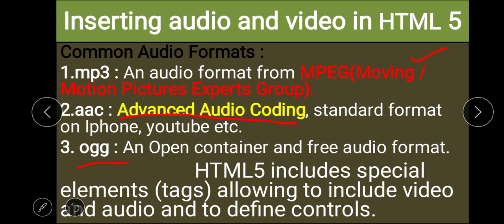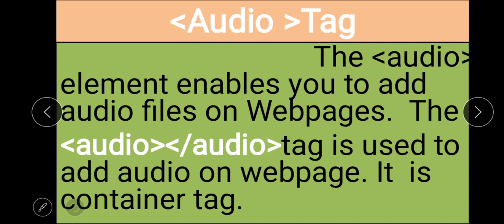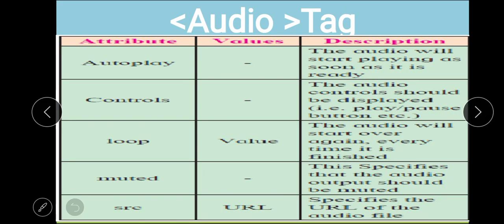HTML5 includes special elements — tags — allowing us to include video and audio and to define controls. The audio tag is used to add audio on a web page. It is a container tag, meaning it has both an opening and a closing tag, and we place our audio file reference between them.